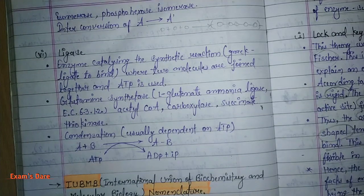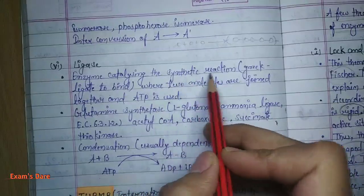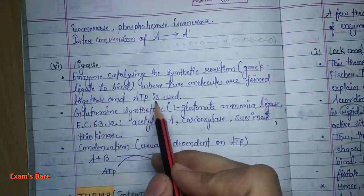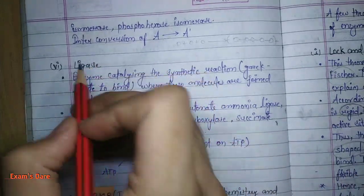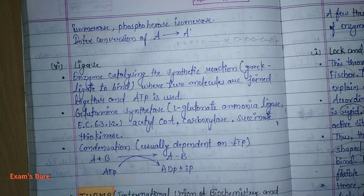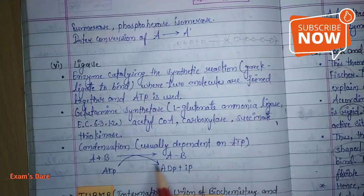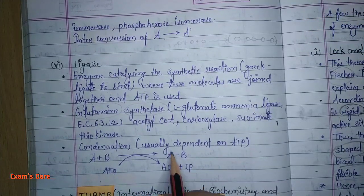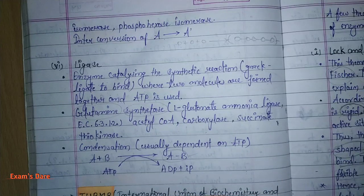Sixth are Ligase enzymes. Ligase catalyzes synthetic reactions where two molecules are joined together and ATP is used. Ligase is called the 'glue' — these are enzymes that add two compounds together in the presence of ATP. The example is glutamine synthetase. The condensation reaction: A + B + ATP produces the AB compound. This completes our classification of enzymes.